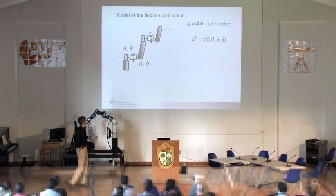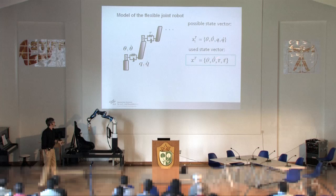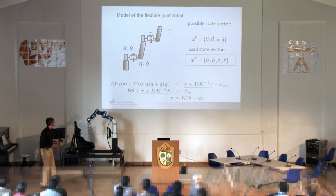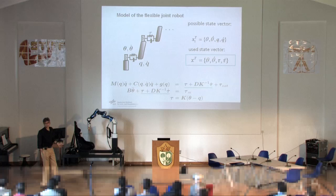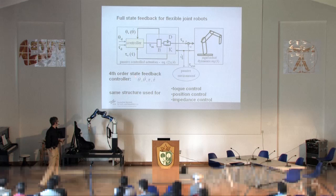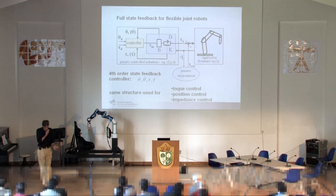Only if you take into consideration the compliances does the torque really become a state. This is the difference between the rigid robot and the flexible joint model — you need to distinguish between motor position and link side position, between motor velocity and link side velocity, and then for each joint you have a fourth-order system with theta, theta-dot on the motor side, and q, q-dot on the link side. We are using for all our controllers this state vector, which is a linear transformation using motor position, motor velocity, torque, and torque derivative.